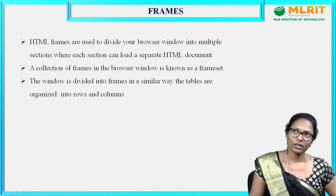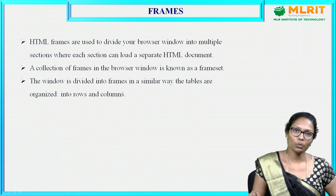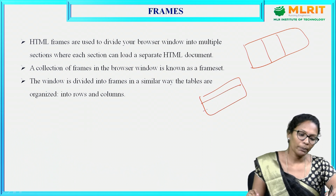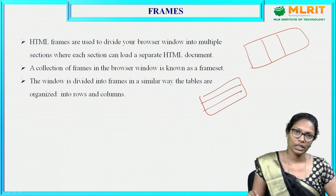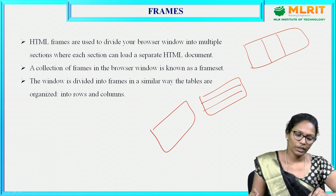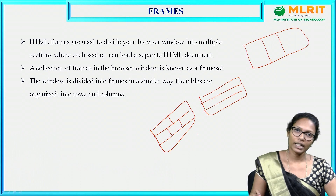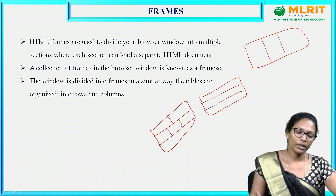Frames are used in situations where you want to divide your page into multiple parts or multiple blocks. A single webpage can be divided into 3 columns, or you may want to divide your page into 3 rows. It may also be customized or combined — one row divided into 2 columns, second row into 3 columns, and third row with no columns. Based on the requirement, frames will be used.